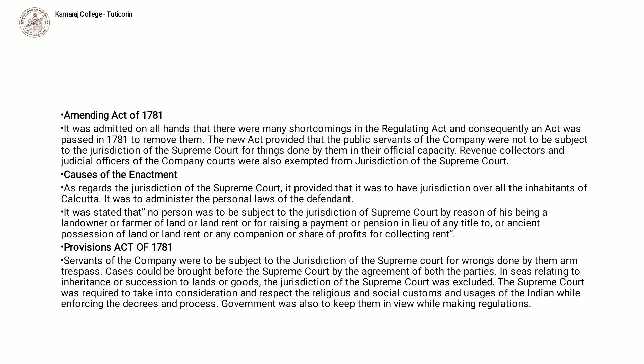It was admitted on all hands that there were many shortcomings in the Regulating Act, and consequently an Act was passed in 1781 to remove them. The new Act provided that the public servants of the Company were not to be subject to the jurisdiction of the Supreme Court for things done in their official capacity. Revenue collectors and judicial officers of the Company Courts were also exempted from the jurisdiction of the Supreme Court.